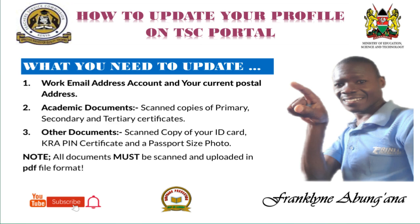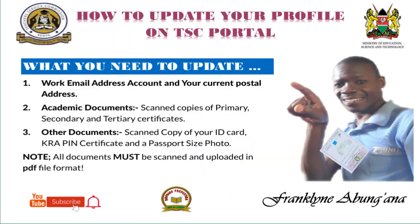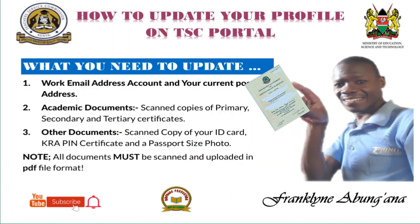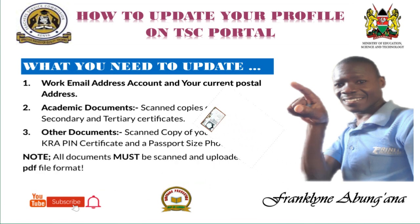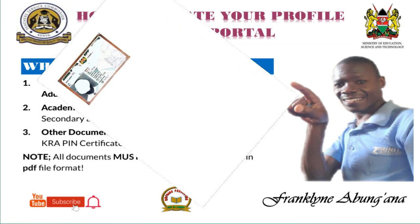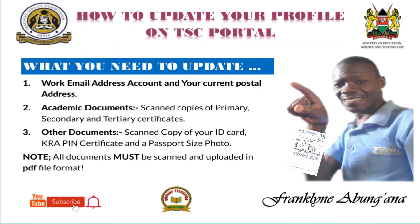You also need the academic documents — that's the second category. This includes your KCPE certificate, KCSE certificate, and tertiary certificates, covering primary level, secondary level, and tertiary level respectively. The third category is what you call other documents. This includes your ID copy — make sure you scan both sides — and your KRA PIN certificate.